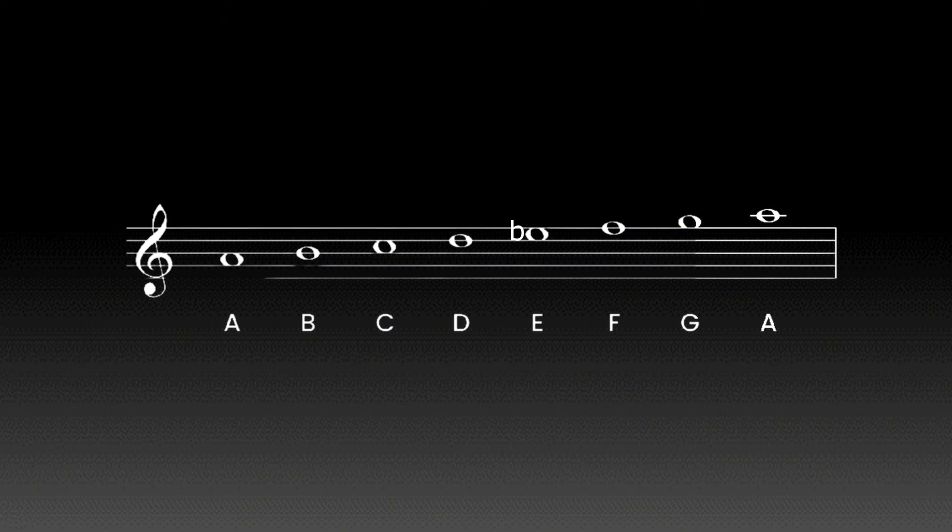Now we are moving to the diminished scale to find the chords. Here we will use the first, the flat third and the flat fifth notes. The diminished chords are formed by the minor scale. For example, in the A diminished scale, we have the A, C and E flat notes. Let's have a look at the fretboard now to find the chords.